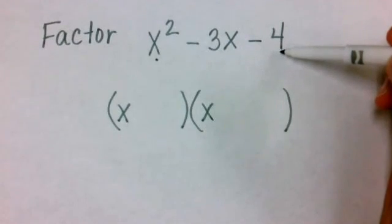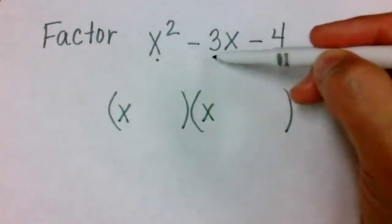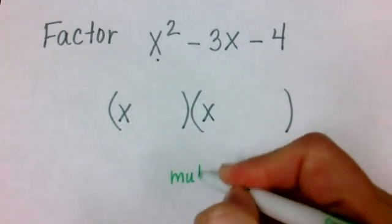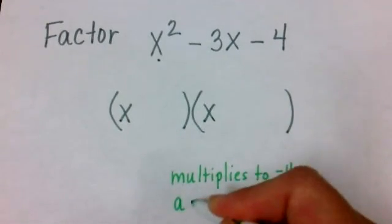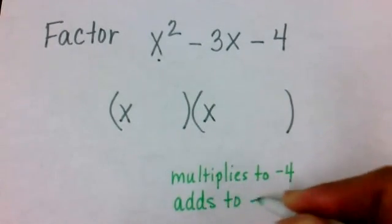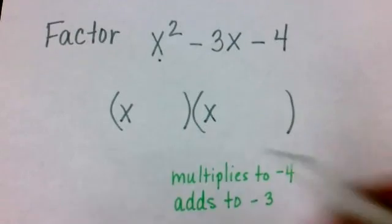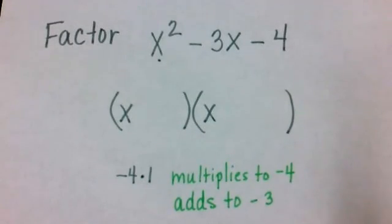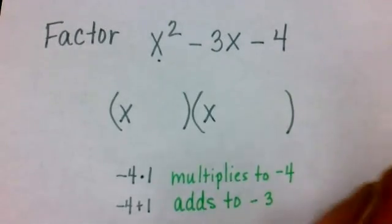Now we look at the last term, the term without a variable with it. We ask ourselves, what will multiply to give us negative 4, but will add to give us the number with x? So we want to know what multiplies to negative 4 but adds to negative 3. Of course, this would have to be negative 4 and 1. Negative 4 times positive 1 will multiply to give us negative 4, and negative 4 plus 1 would give me negative 3. So I'm going to place these in the parentheses.